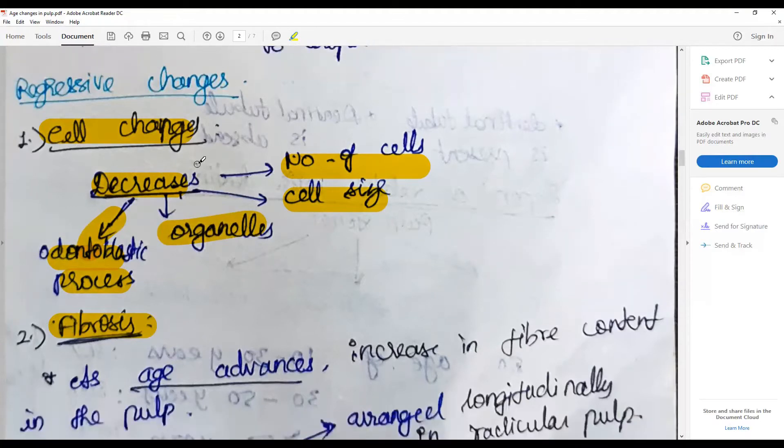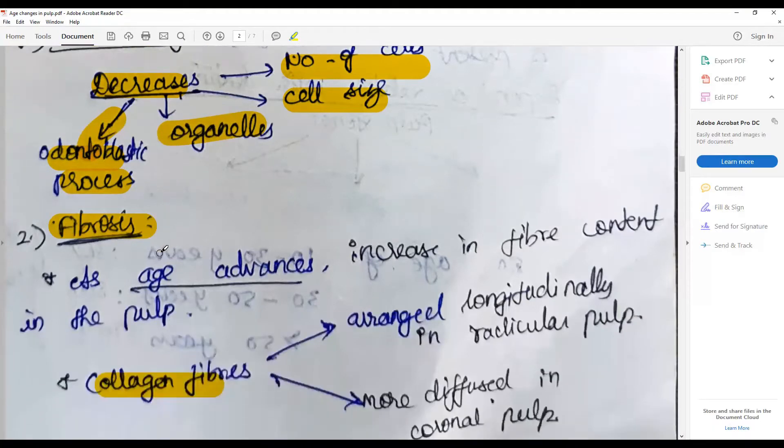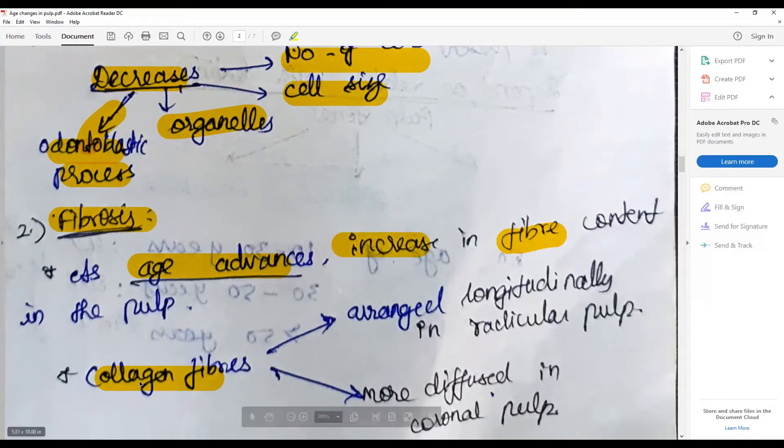There's decrease in the organelles in each of the cells, the number of the cells and the cell size. Fibrosis: as age advances there is increase in the fibrous content. The cellularity reduces whereas the fibers increase.